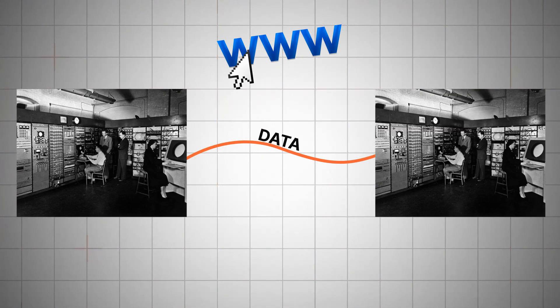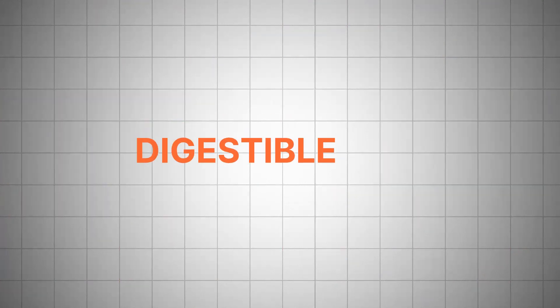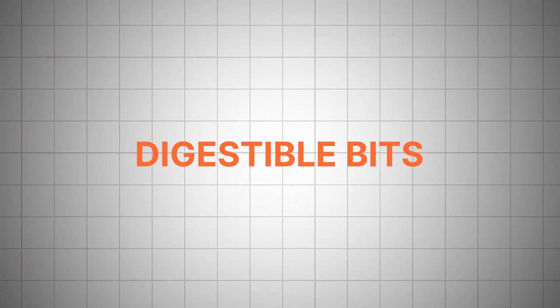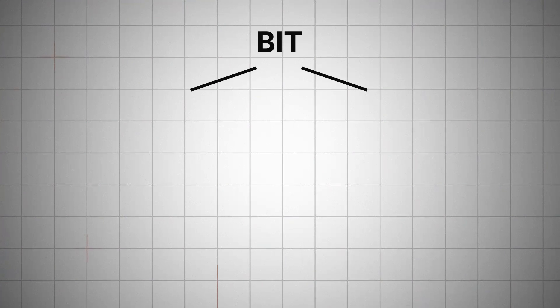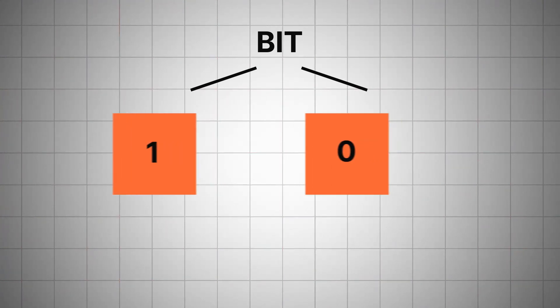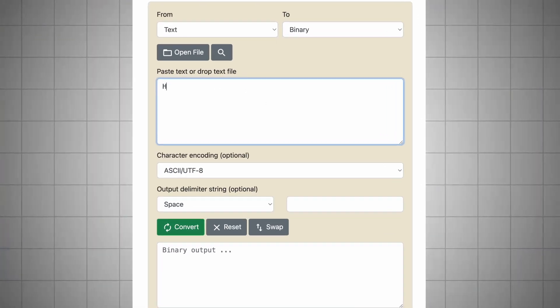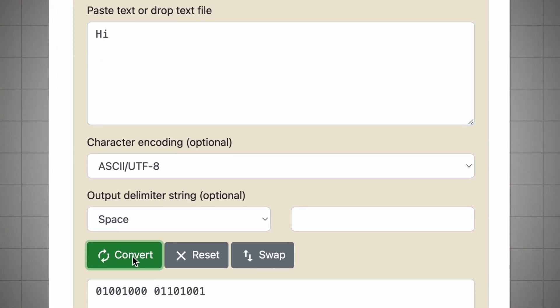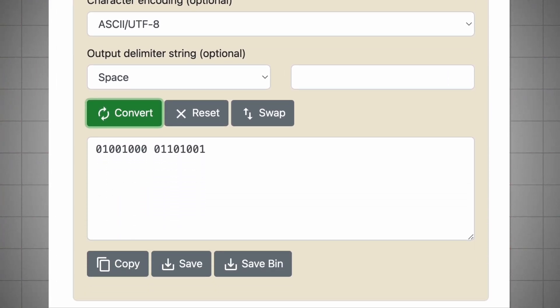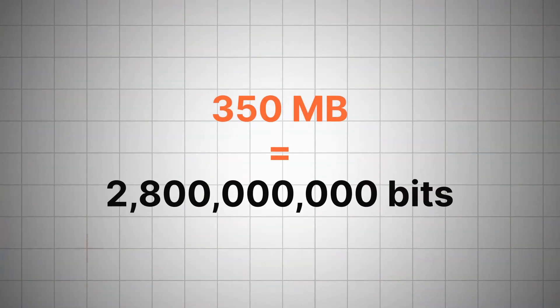With the internet, the data first needs to be converted into more digestible bits. That's actually what they're called — bits — minus the digestible part. Each bit is either 1 or 0, and 8 bits are a byte. A simple 'hi' in computer language is 16 bits, while a 4-minute Cool Tech Zone video is almost — carry the 2 — 3 million bits.